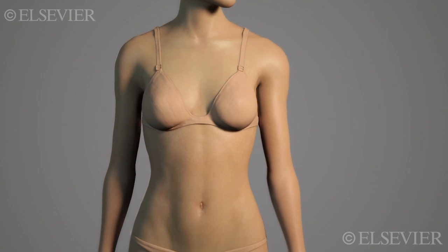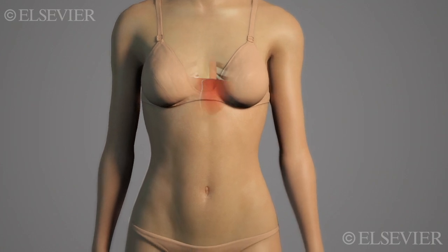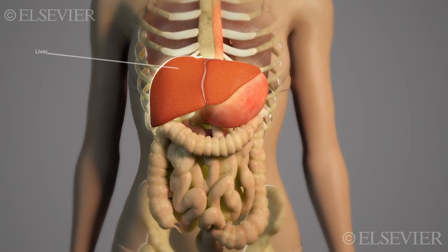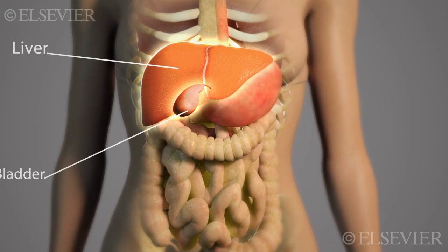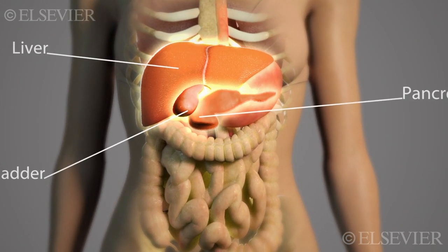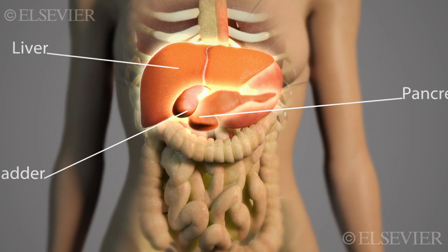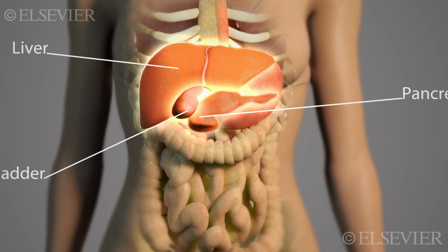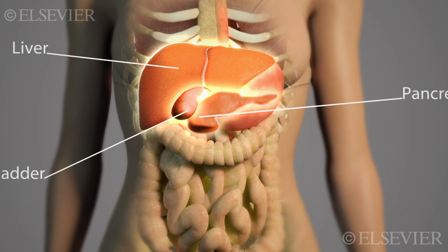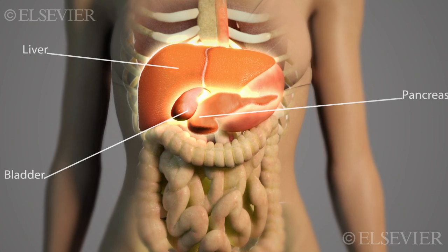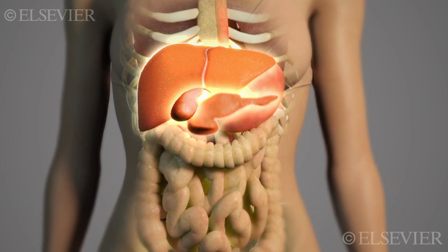Several ducts connect the accessory organs—the liver, gallbladder, and pancreas—to the small intestine. These ducts deliver secretions necessary for completing the chemical digestion of food so it can be absorbed into the blood and lymph.